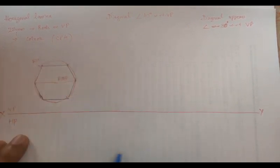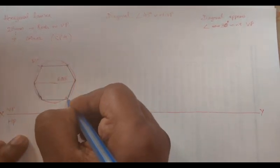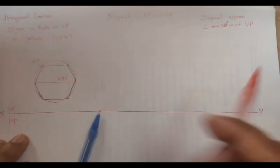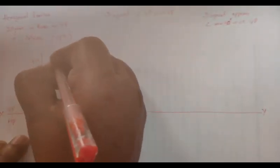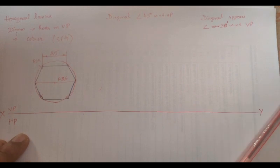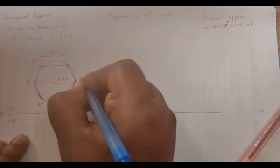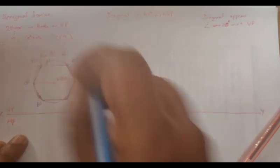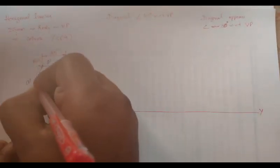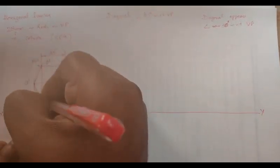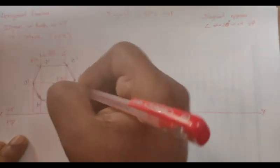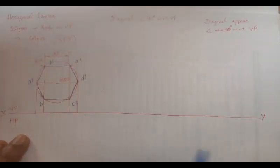25, 25. A dash, B dash, C dash, D dash, E dash, F dash. We're going to do the projections to get the top view, and those projections should be thin lines. Top view should be thick. Do not forget to make it dark.